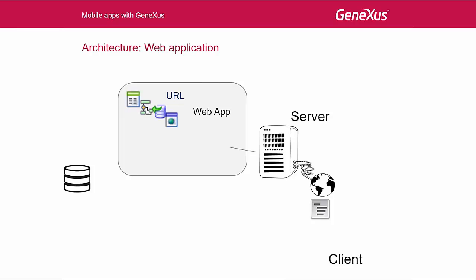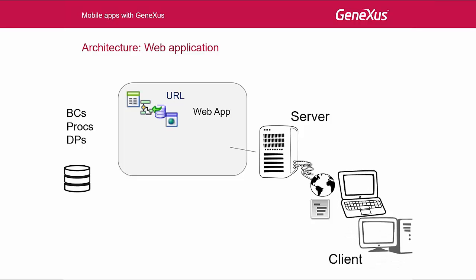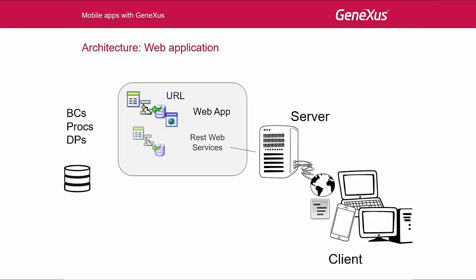So we continue to work only with the web application. In general, if we want some of the application's objects that process and return structured data, such as transactions as business components, procedures, or data providers, and we want them to be consumed by other programs — not necessarily implemented by GeneXus — through the internet, from a notebook, PC, or smart device, a good solution is to expose them as REST Web Services. In this way, they will be application APIs, making up a service layer.